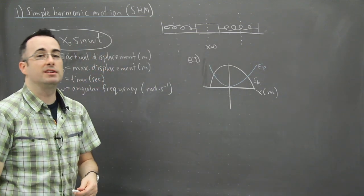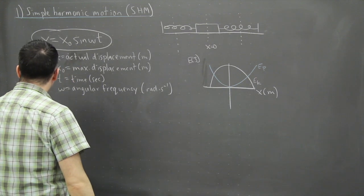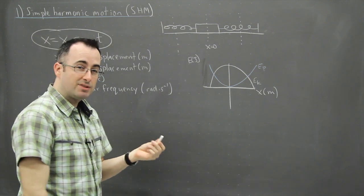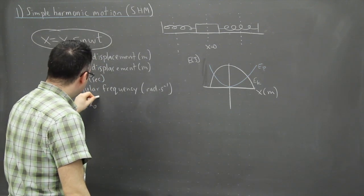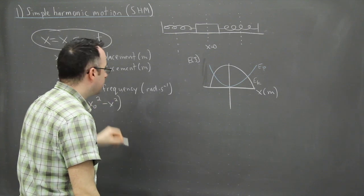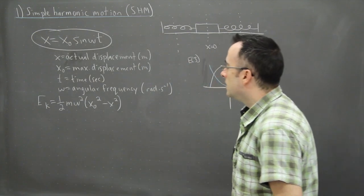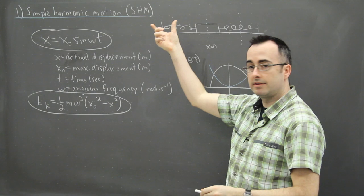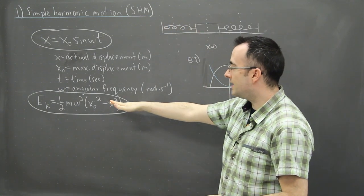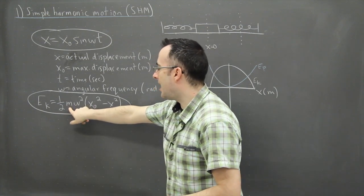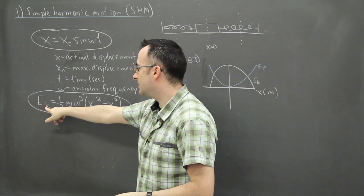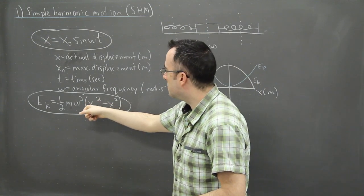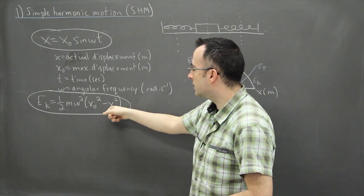Now we have another equation — this one is for the kinetic energy at any point. It's going to be one half m omega squared, multiplied by x₀ squared minus x squared. This equation tells you the kinetic energy of the object in simple harmonic motion at any position. m is just your mass in kilograms, and EK is your energy in joules. What's happening here is we have a difference of squares: your maximum displacement compared to your actual displacement.